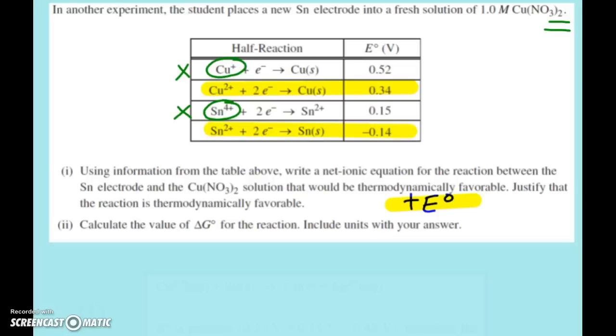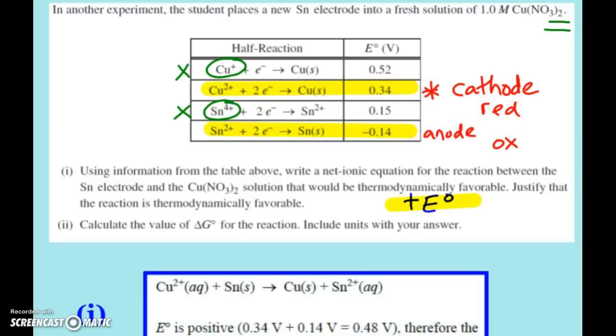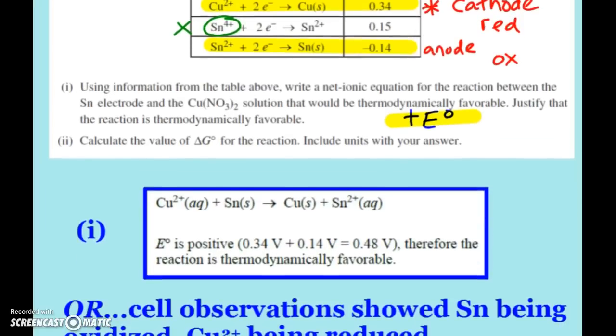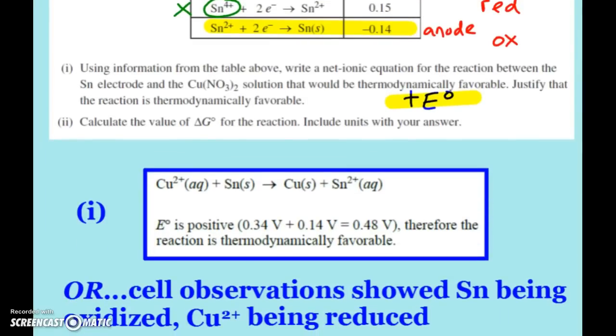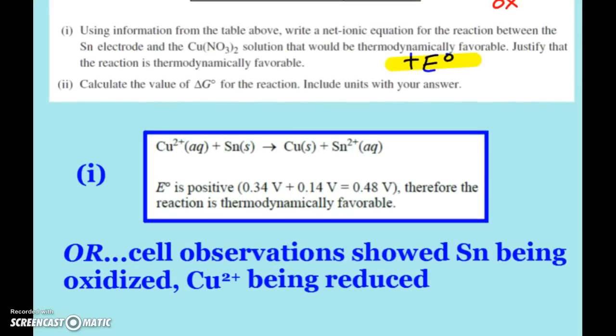So when I look up there, this is the more positive, this is the cathode. Okay, and so that's reducing and this is the anode and that's our oxidation. And so what we have here is our copper two ion plus tin is making copper plus our tin two ion. That gives our positive E naught value of 0.48 volts.